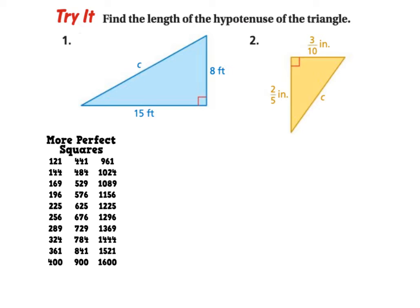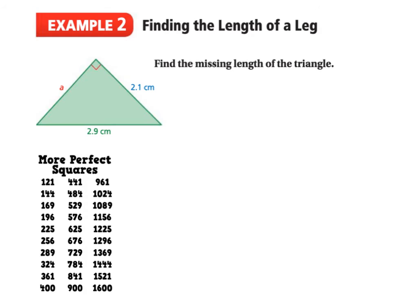Here are two try questions for you to pause the video and try out. I want to draw your attention to number two — we have fractions: 2 over 5 and 3 over 10. When squaring fractions, for example, 2 over 5 squared is 2 over 5 times 2 over 5, which is 4 over 25.